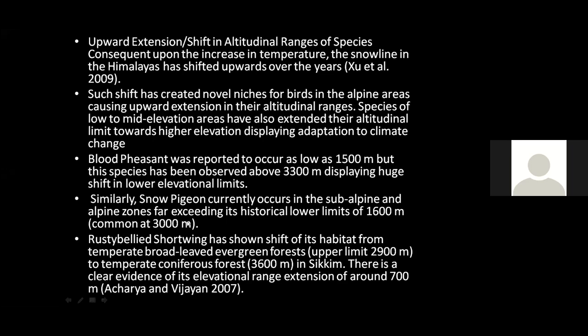Studies have revealed that climate change across the Himalaya is manifested in the form of glacial melt, change in sowing and harvesting seasons, decreased productivity of crops, invasion of new species, drying of springs, shifting geographical ranges, and changes in species composition. Upward extension and shift in altitude range of species due to climate change has been reported for both plants and animals. For example, the blood pheasant, previously reported mostly at 1,500 meter altitude, is now present at 3,300 meters altitude. Similar cases are reported for the snow pigeon and the rusty-bellied shortwing, which shows an elevation range extension of around 700 meters.